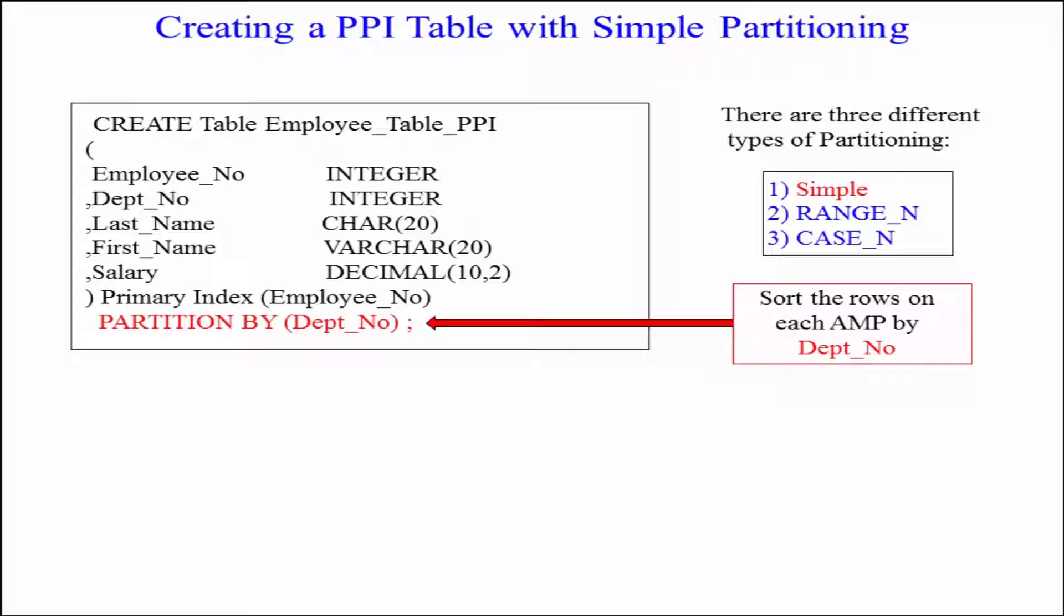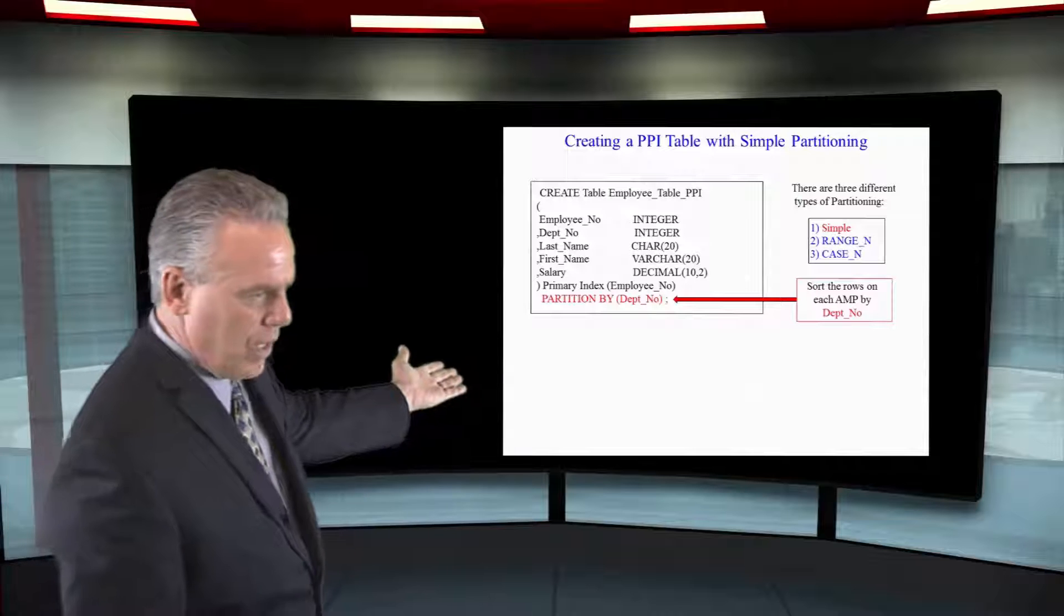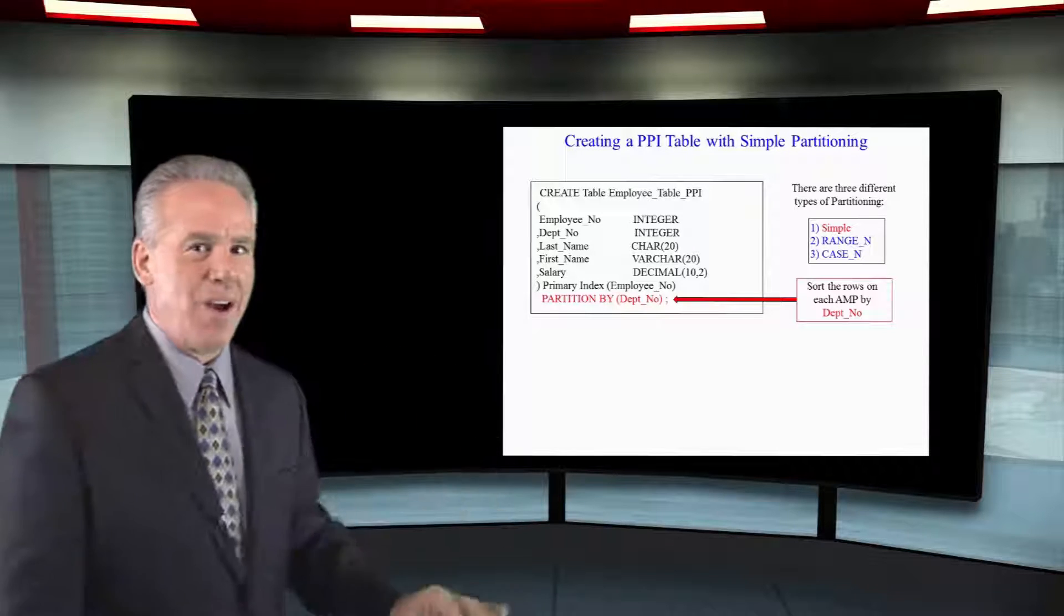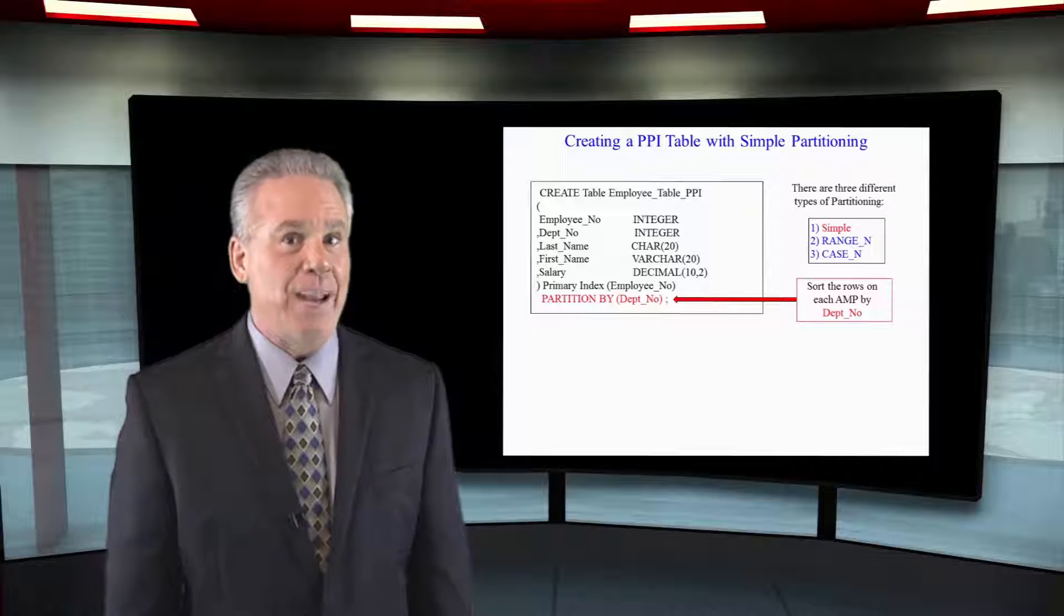Now there's three types of partitioning: Simple, as in this case, RANGE_N, and CASE_N. And here you can see we've got a primary index of employee number, but we say partitioned by Depno, and that's how each AMP is going to sort it.